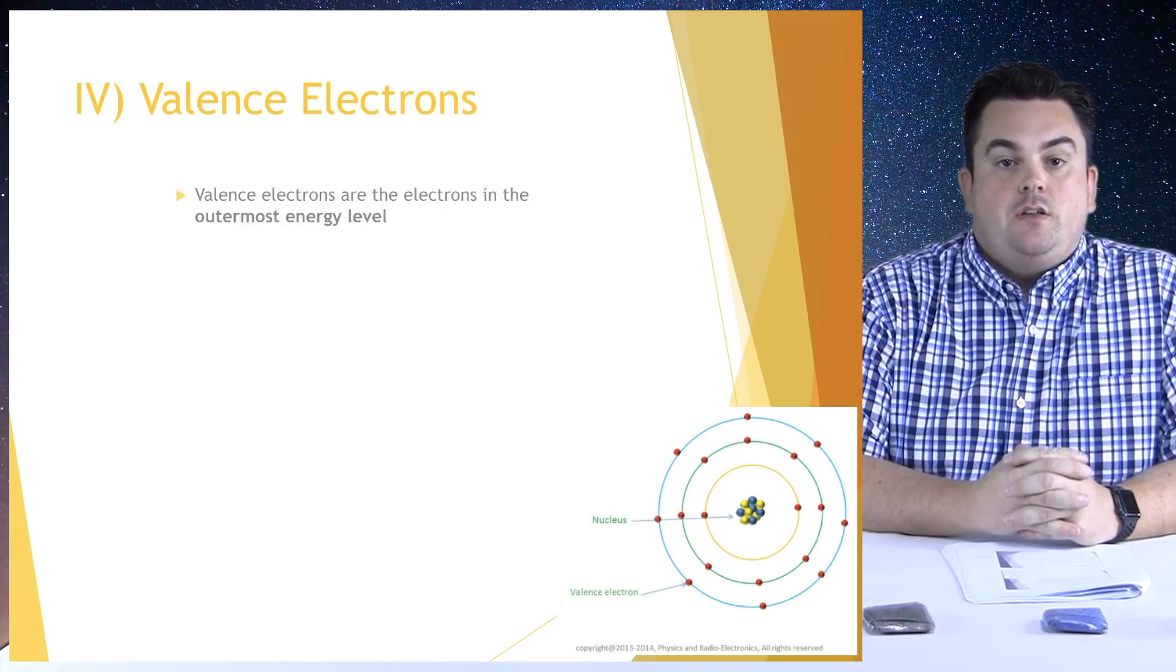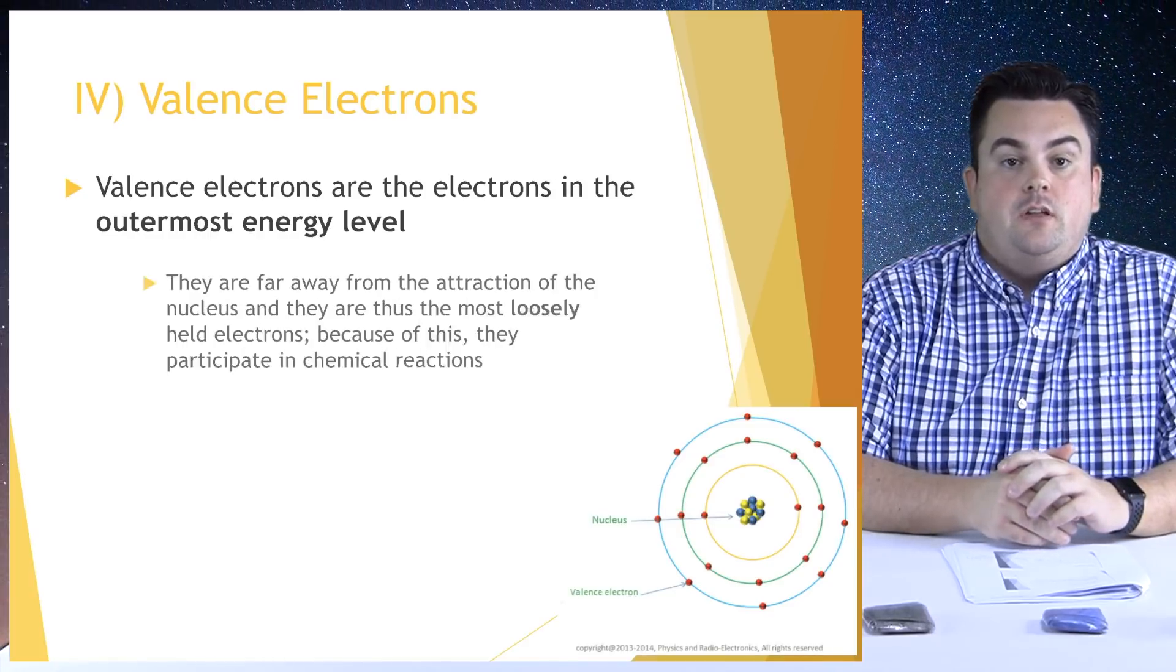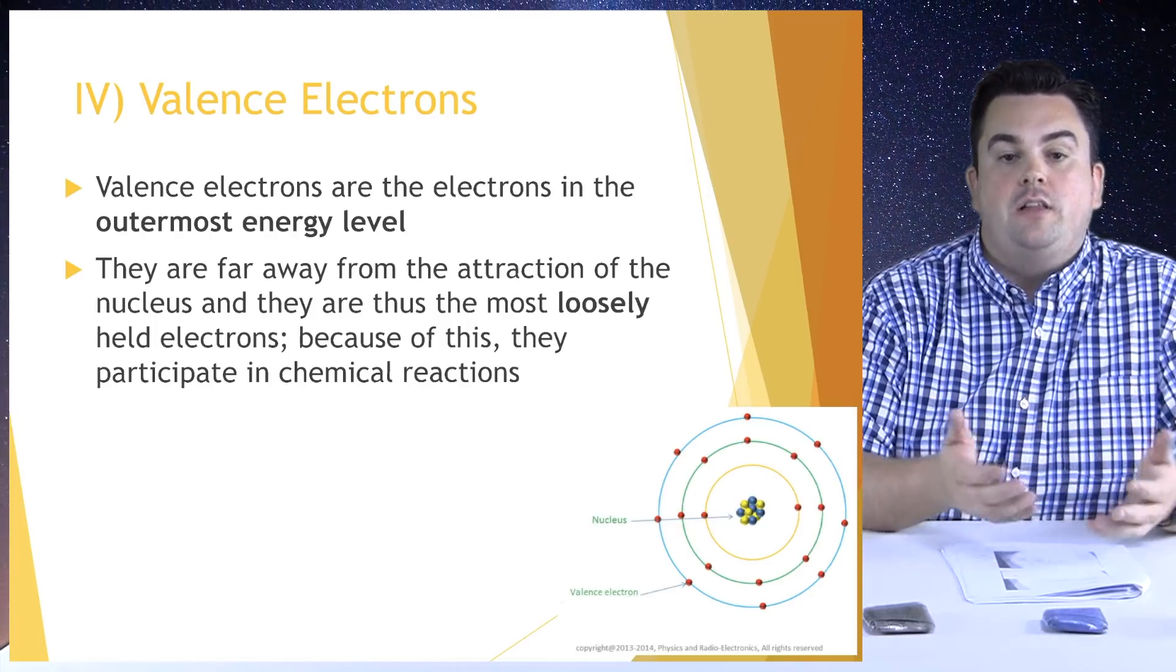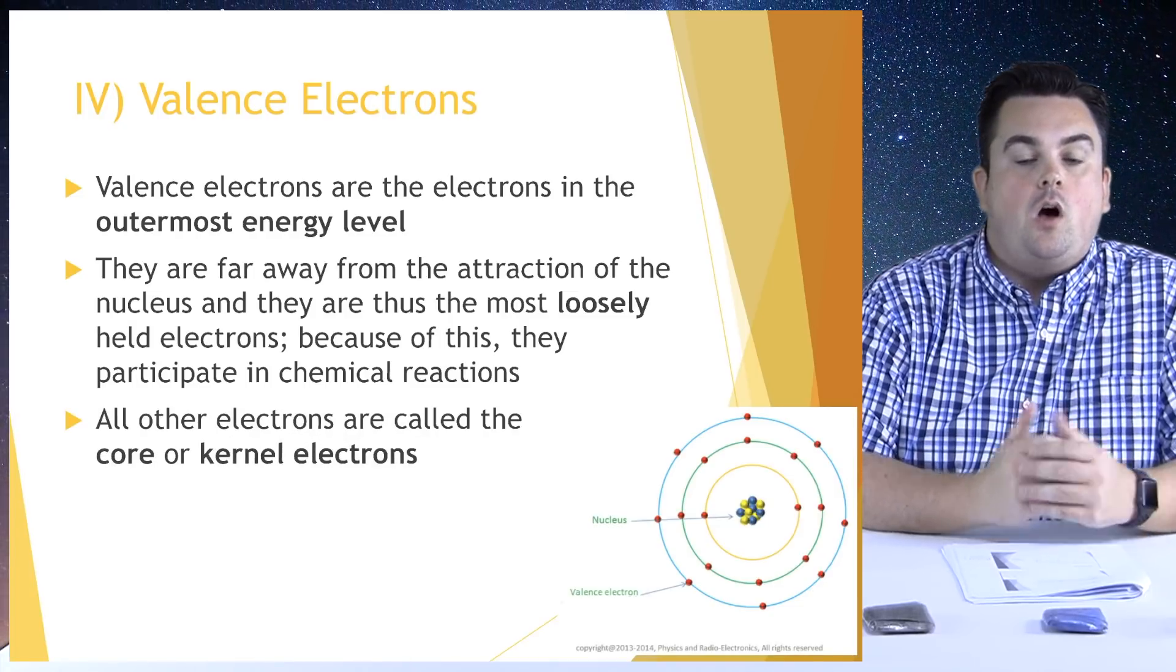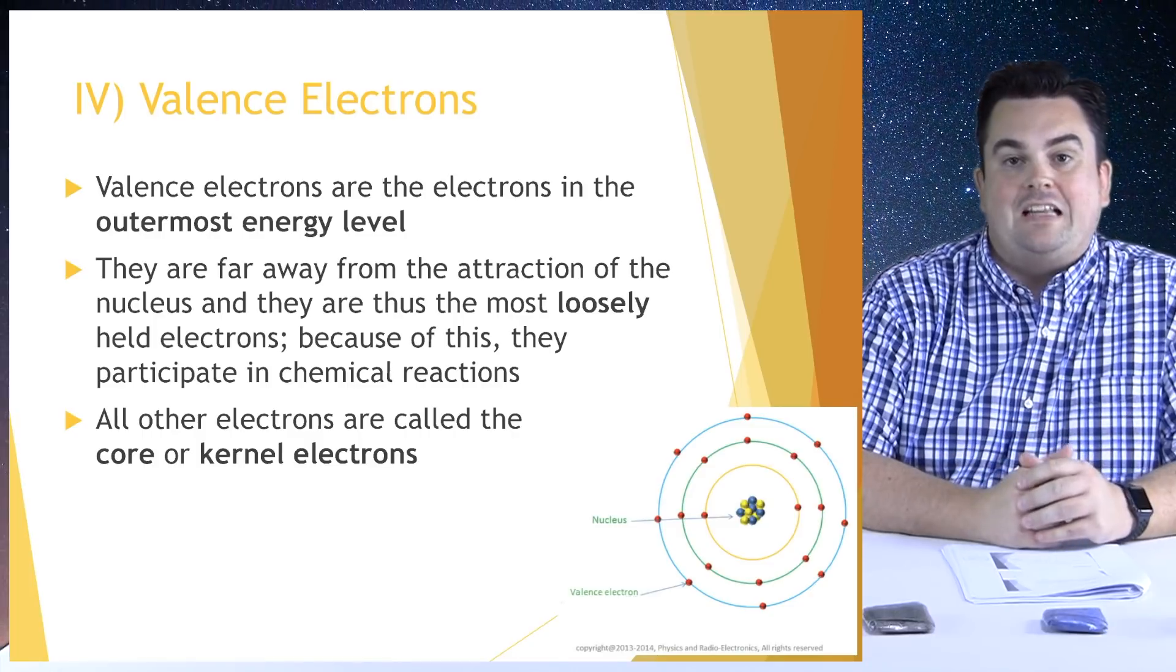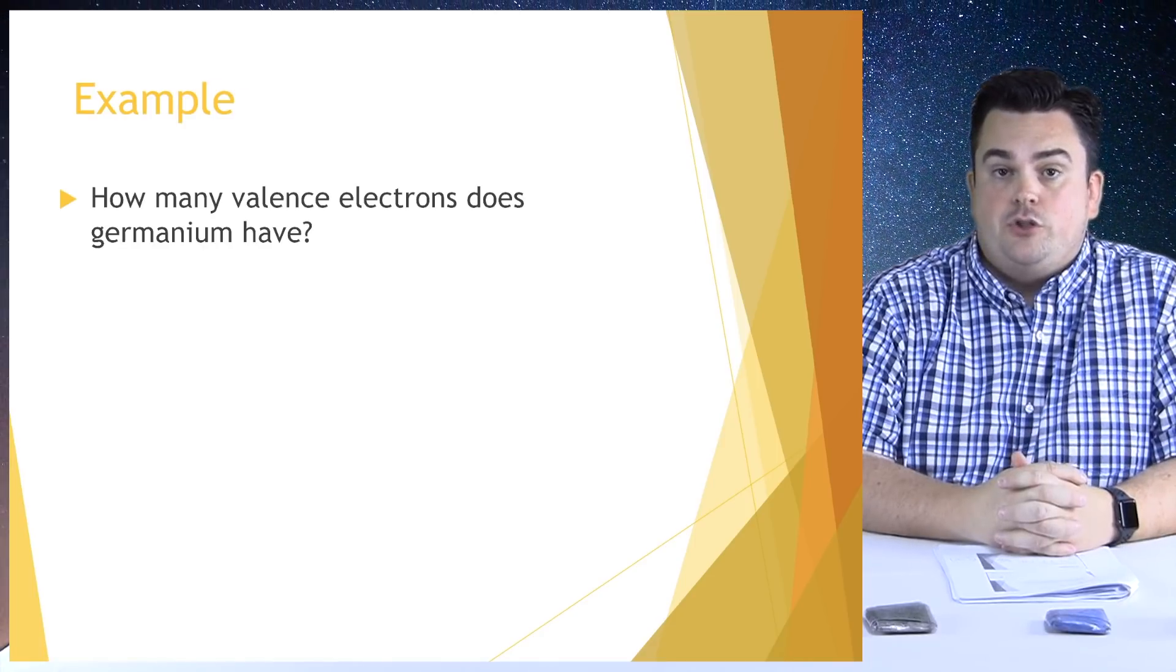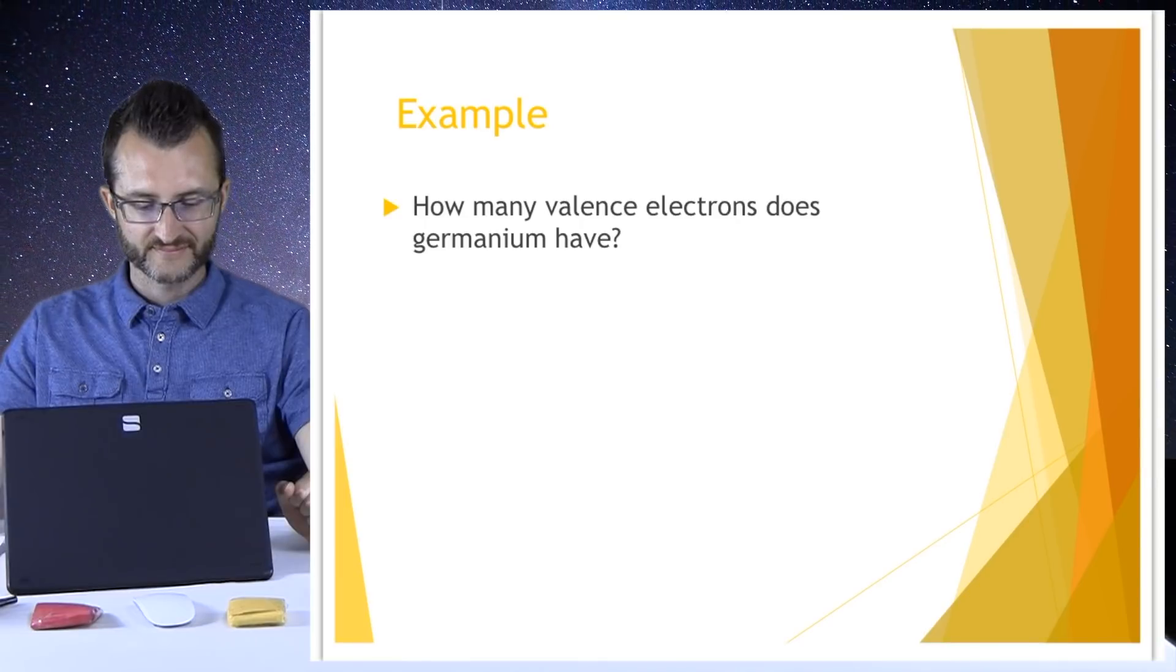Valence electrons. Valence electrons are the electrons in the outermost energy level. They are far away from the attraction of the nucleus and they are thus the most loosely held electrons. Because of this, they participate in chemical reactions. All other electrons are called the core or kernel electrons. So we're going to do an example of how to figure out how to get valence electrons. Are you ready? I'm ready.